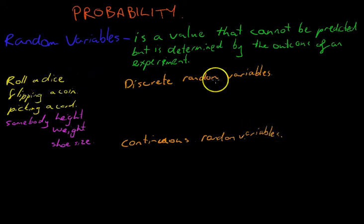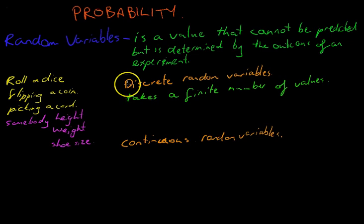The difference between these things is how you count them. A discrete random variable takes a finite number of values. Finite means a fixed number. Whereas a continuous random variable takes an infinite number of values.